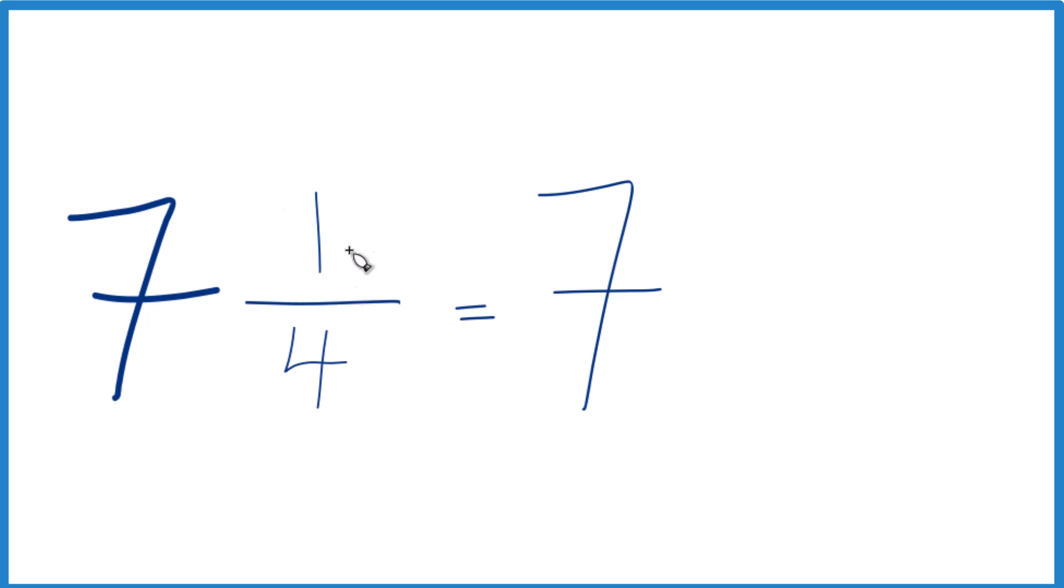And then 1/4, we need to get this to be a decimal. You might know that 1/4 is the same as 0.25. And if you know that, you're done. The fraction 7 and 1/4 equals 7.25.